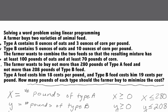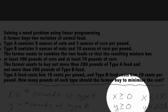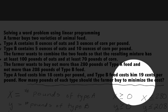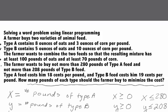Since we're asked about how many pounds of each type, our variables are: x equals the number of pounds of type A, and y equals the number of pounds of type B. Neither can be negative, so x ≥ 0 and y ≥ 0.